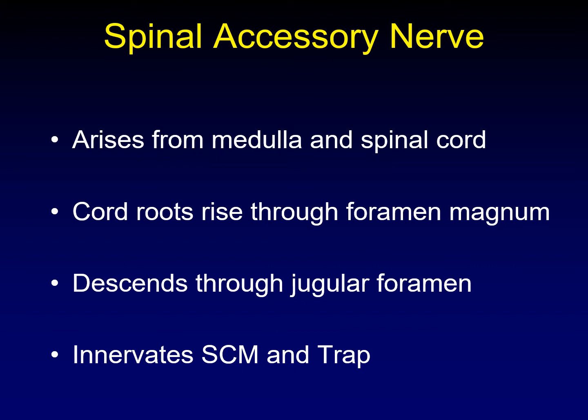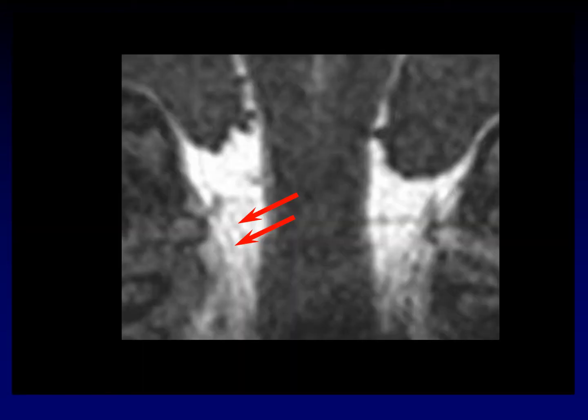Once it leaves the jugular foramen, it is responsible for innervating the sternocleidomastoid muscle and the trapezius muscle. Here is a coronal image in steady-state free precession showing the small rootlets from the spinal cord extending up through the foramen magnum to form the 11th cranial nerve.